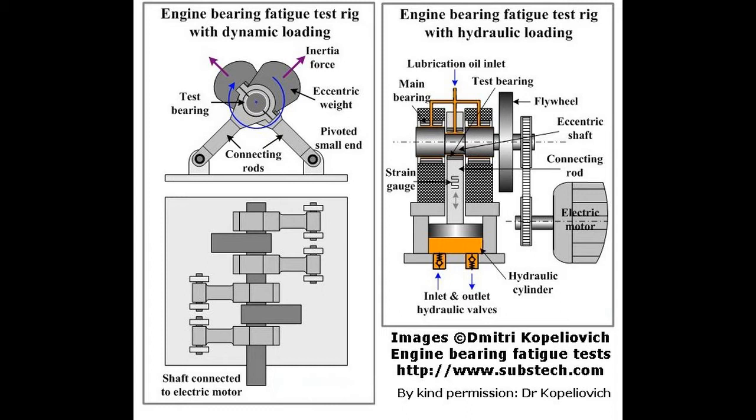Hydraulically loaded rigs can be subdivided into two types: rigs in which a hydraulic pulse is produced by motion generated by the test rig itself, and rigs where the pulse is introduced by a separate servo-hydraulic actuator.